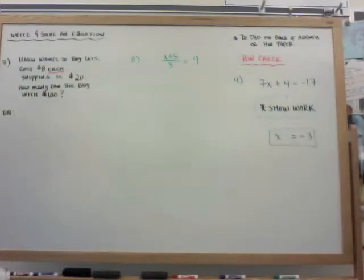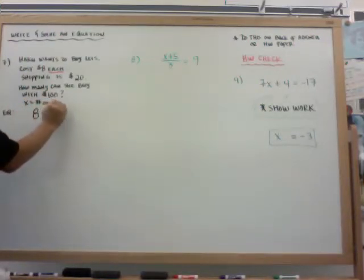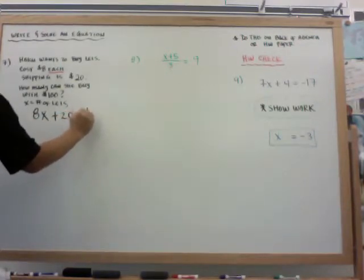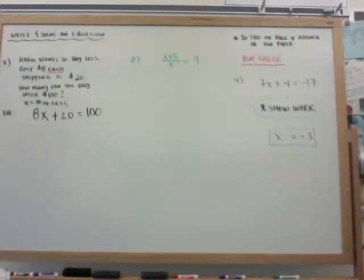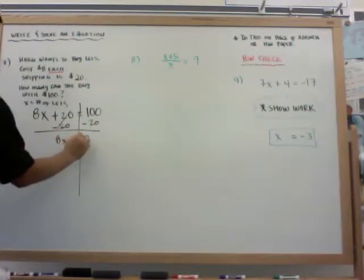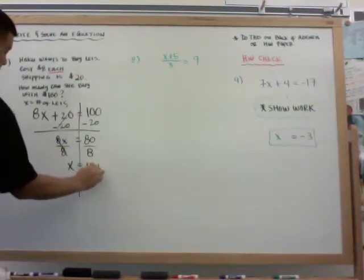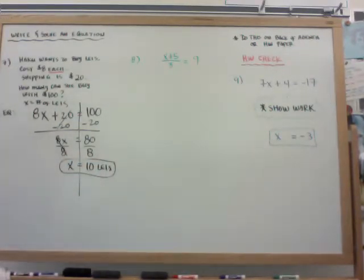So that's how you do two-step problems. I'm going to show you next how to write a two-step problem for a word problem as well as a kind of a tricky problem. So here's the next one. Haku wants to buy lays. They cost $8 each. Shipping is $20. How many can she buy if she has $100? Okay. So you have your equation. The key word is $8 each. So if it's $8 each it would be 8 times x. X is the number of lays. Okay. So if x equals the number of lays, 8x and the shipping is a set $20 so plus 20. So she's spending 8 times however many lays plus 20 equals and she has $100. There's your equation. And now you want to solve it the same way. So you minus 20 from both sides. And now you got 8x is equal to 80. And now I just divide by 8. And x is equal to 10 lays.